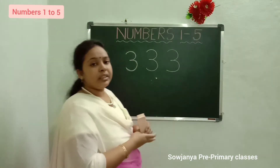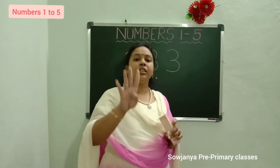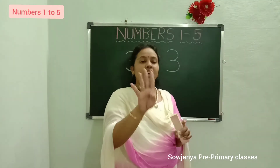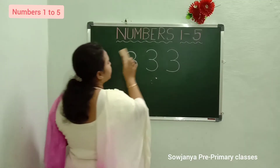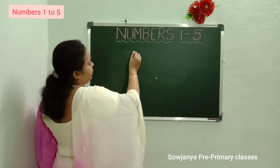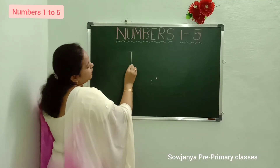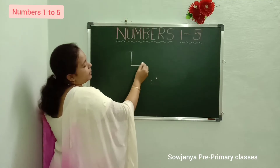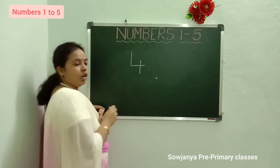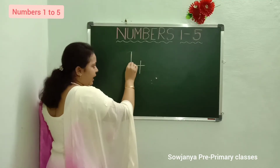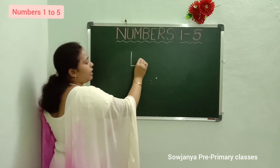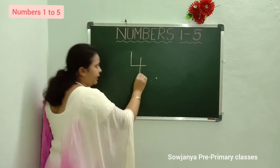Now, what is the next number? 3 after 4. Okay children. Now we will write number 4. How to write 4? It's very easy. Put a standing line, sleeping line. In the middle of the sleeping line, put again one standing line going down. 4. Standing line, sleeping line. Put in the middle of the sleeping line one more standing line. 4.